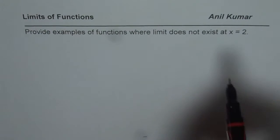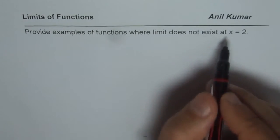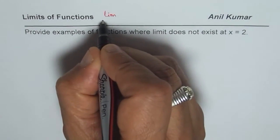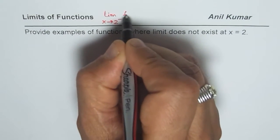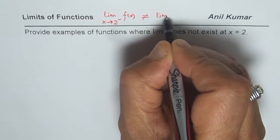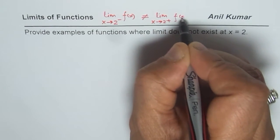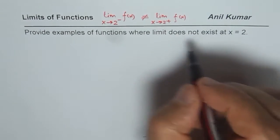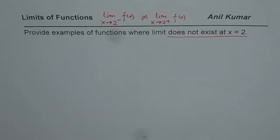Now the basic criteria here is we have to check the limit from both sides. So what we need to prove is that the limit as x approaches 2 from the left side for the given function is not equal to the limit when x is approaching 2 from the positive side. If that is the condition, then it does not exist at 2. That is the basis for our examples.